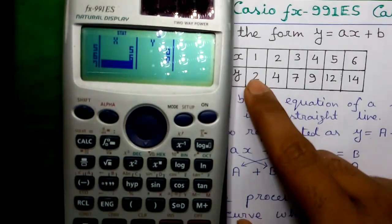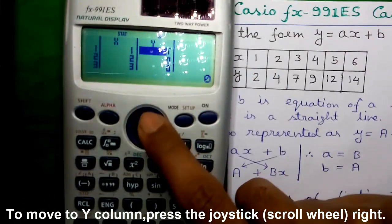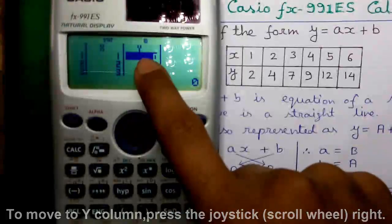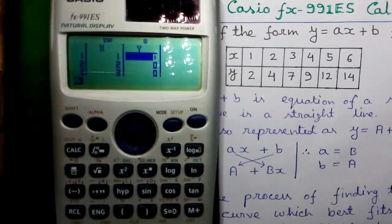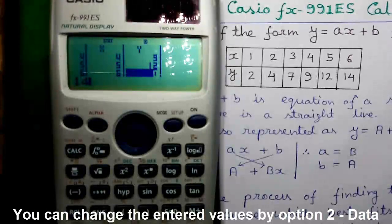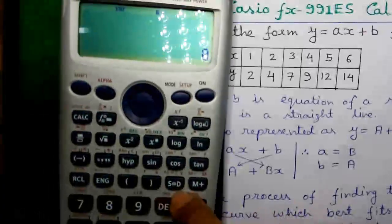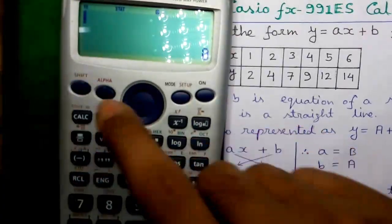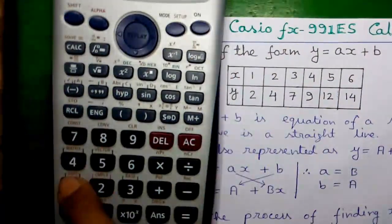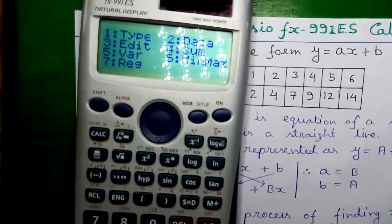Next, we will enter the corresponding Y values. Move the cursor up. For X = 1, Y is 2. Next: 4, 7, 9, 12 and 14. So after entering the values, clear the screen by pressing the AC button. Next, press Shift, 1 for statistics mode. And we are doing linear regression, so press 7 for that.